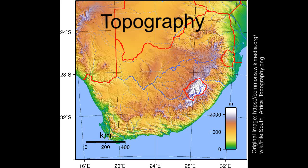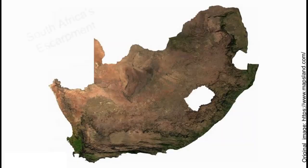South Africa's escarpment joins the high and low-lying areas. The slope is steep, and in South Africa six different mountain ranges put together create like a bowl around the country.